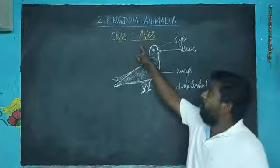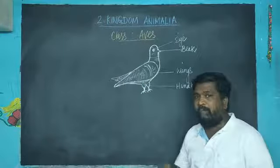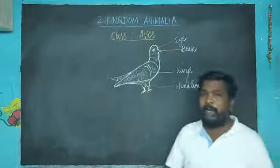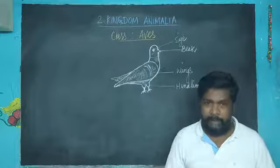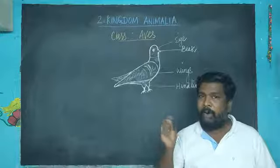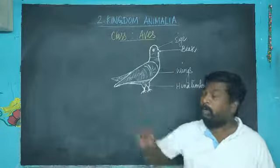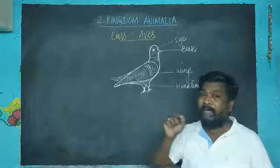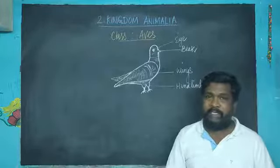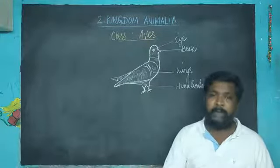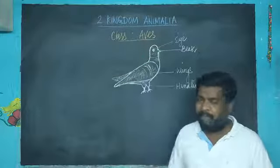Now we are going to learn about the class Aves. Aves are those organisms having feathers and capable to fly. Except some flightless birds like kiwi, ostrich, and penguin, which are flightless birds, but their body is still made up of feathers.